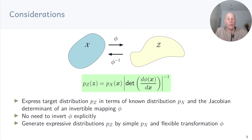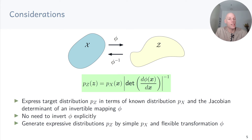The change of variables trick allows us to express a target distribution pz in terms of a known distribution px and the Jacobian determinant of an invertible mapping phi. There is no need to invert phi explicitly, because the determinant of an inverse is 1 divided by the determinant of the forward mapping. The change of variables trick therefore allows us to generate expressive distributions pz, starting with a simple base distribution px and a flexible invertible transformation phi.